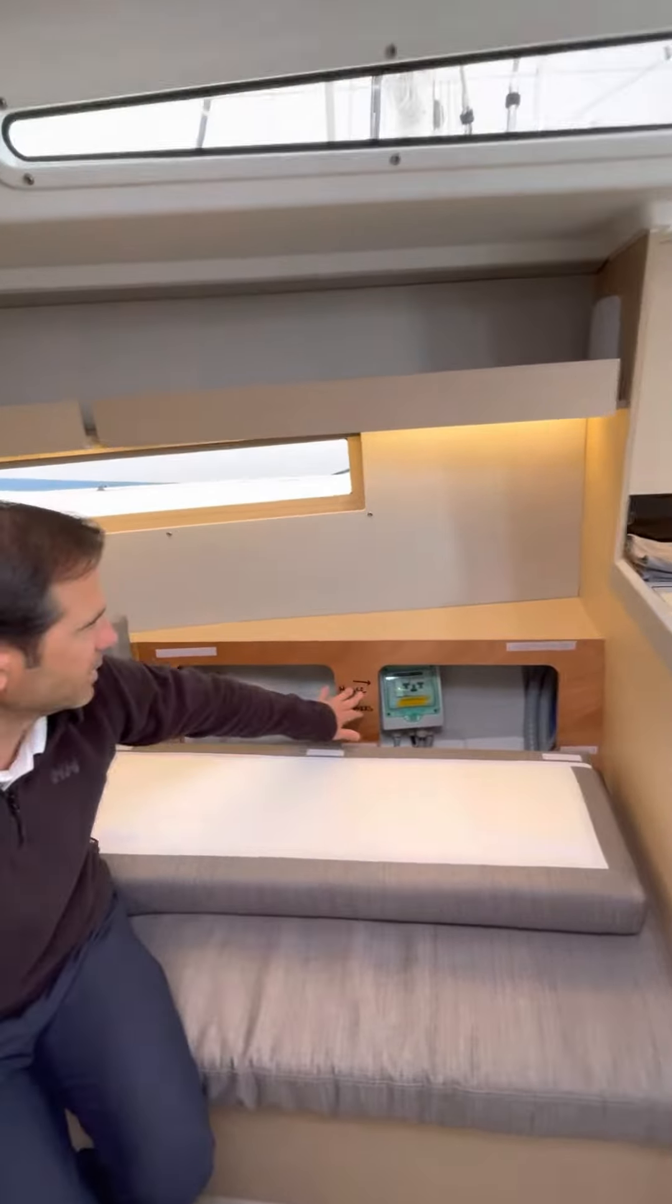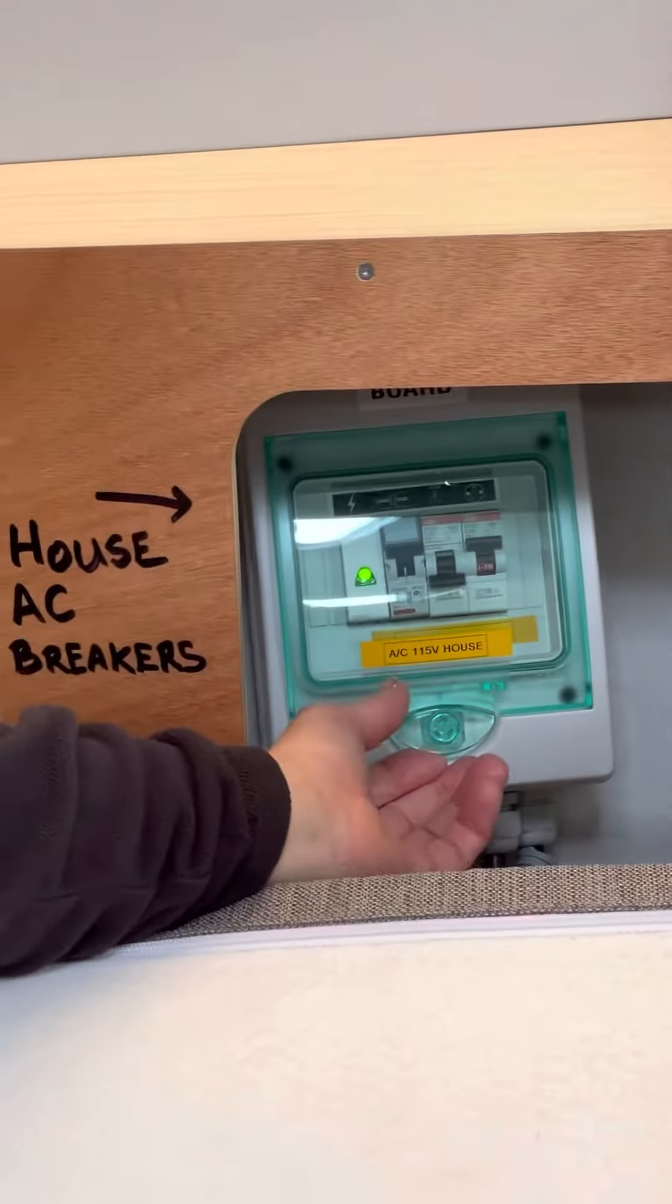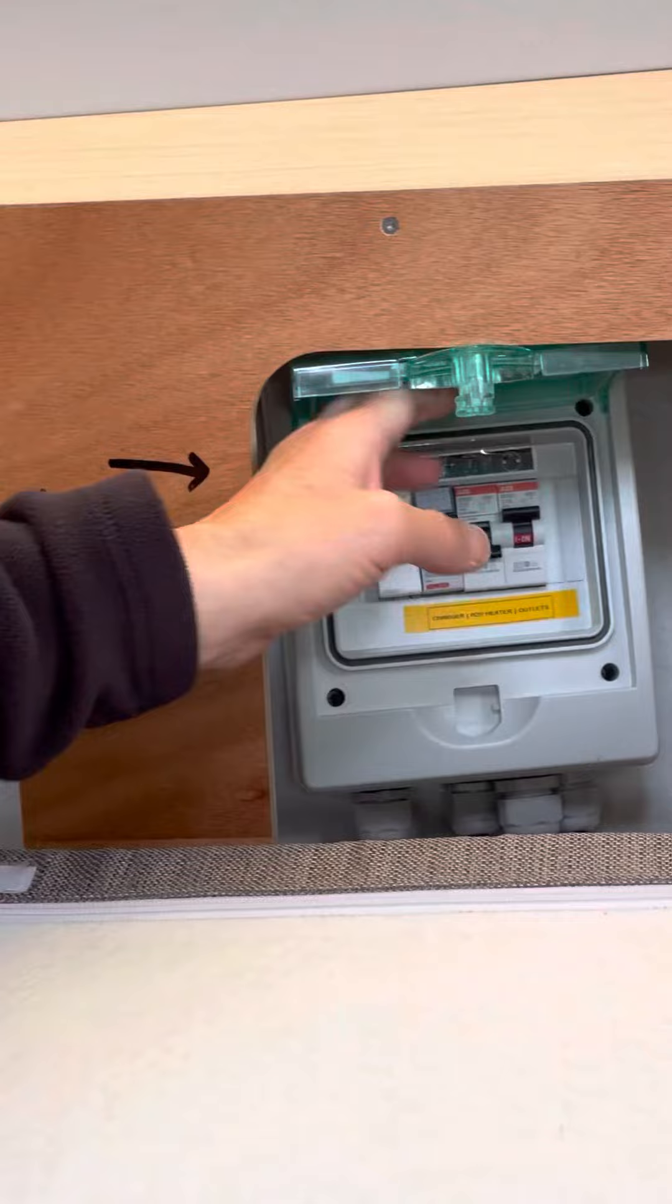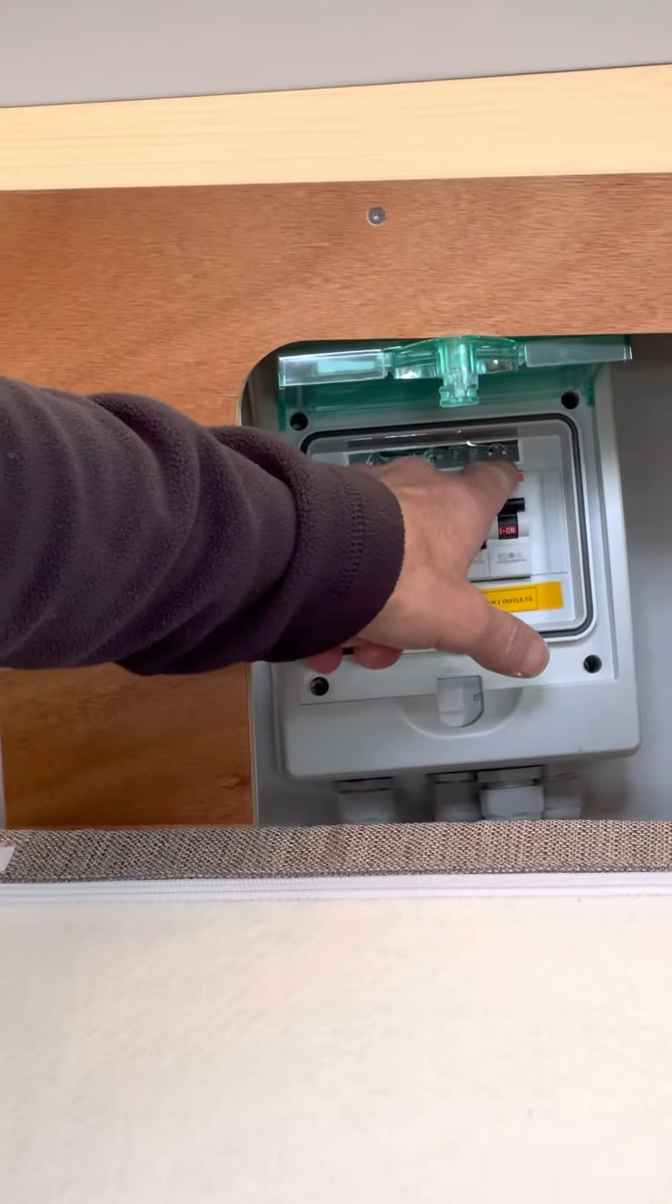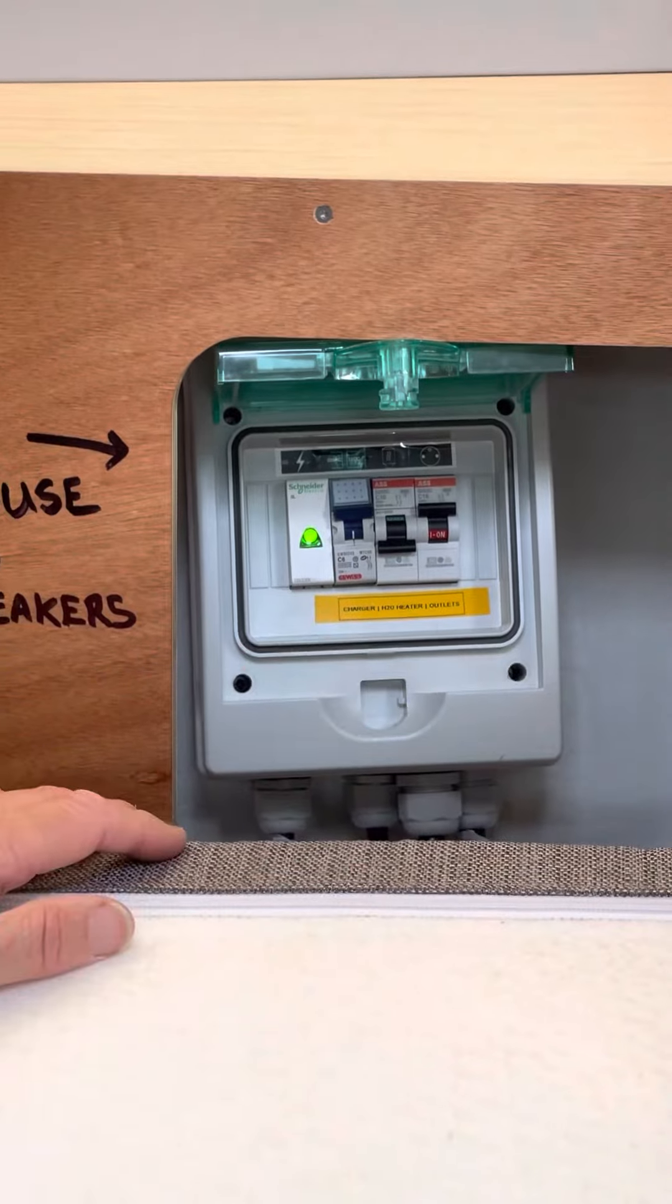Right here you can see the AC house breakers as well as the water heater breaker. You can look at the top here and it tells you what it is: plugs, water heater, AC house breaker.